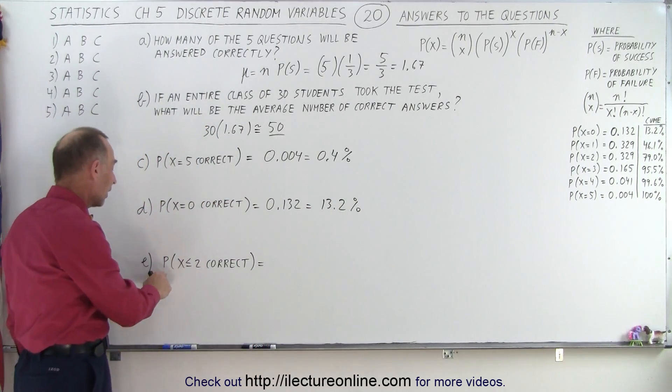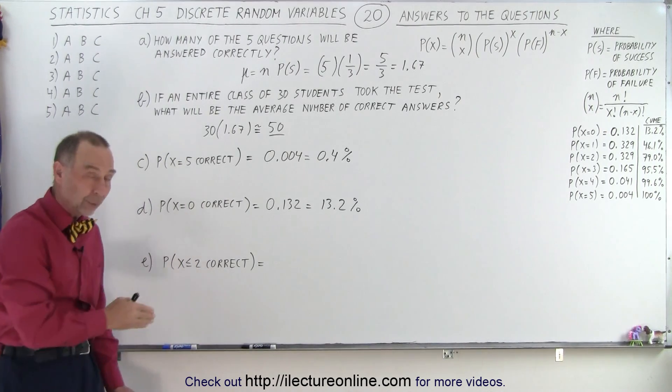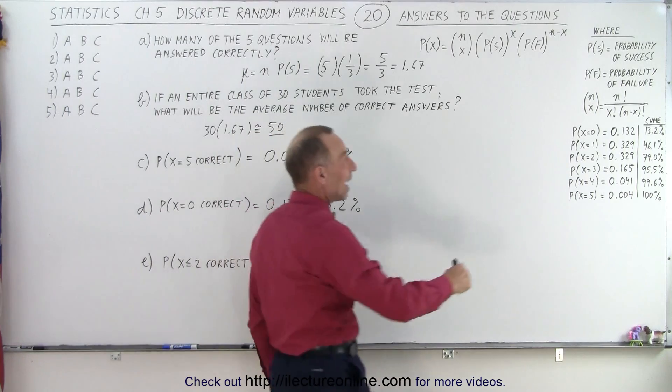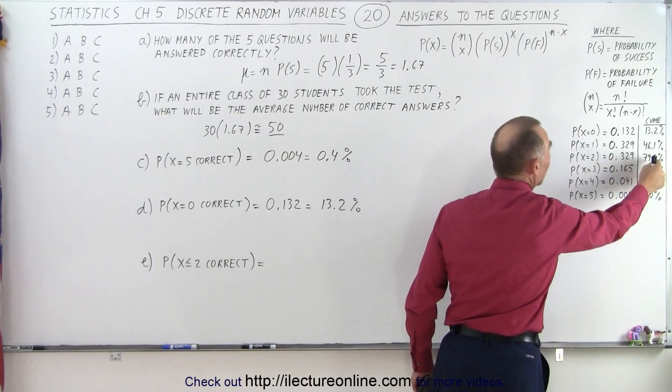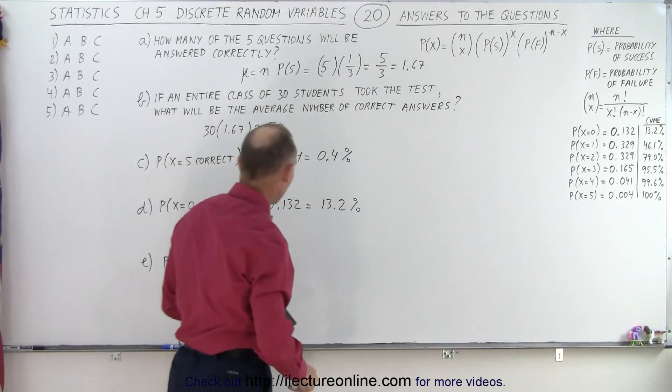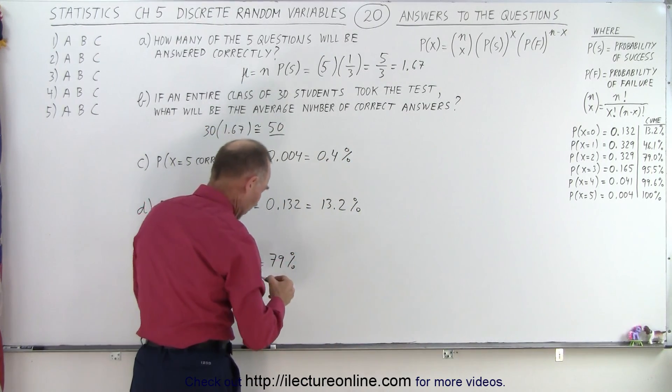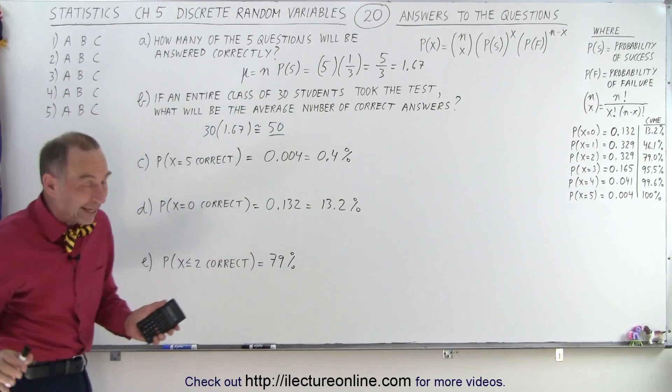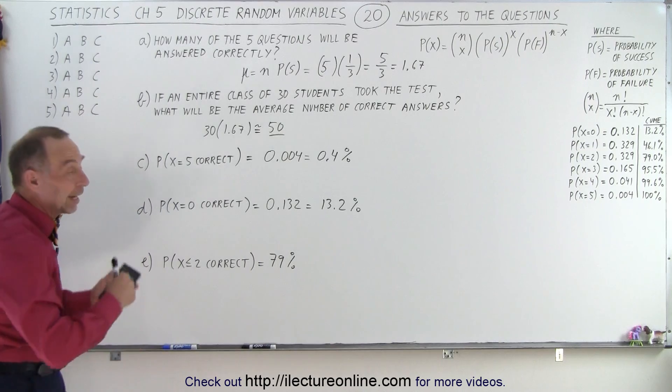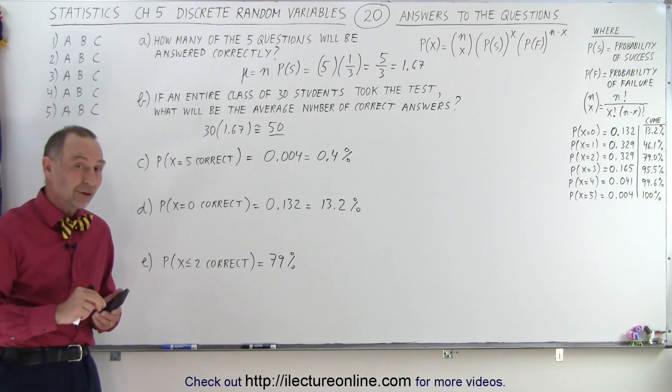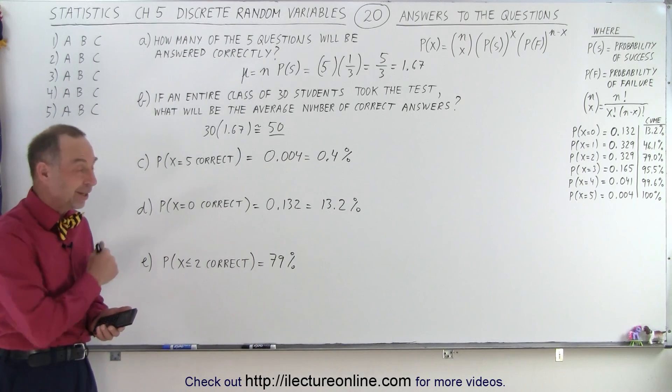And finally, again, if we are trying to figure out the probability of getting either 0, 1, or 2, 2 or less correct, then all we have to do is add up these first 3 probabilities. And notice when we add them up, we get a probability of 79%. So if you're going to take a test like this and purely guess for all 5 of the questions, there's a 79% probability you'll get either 0, 1, or 2 questions correct. And that is how it's done.